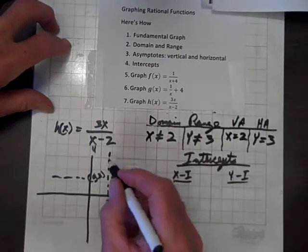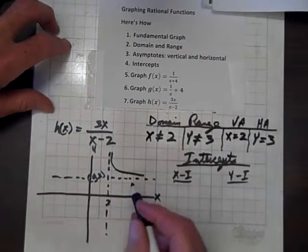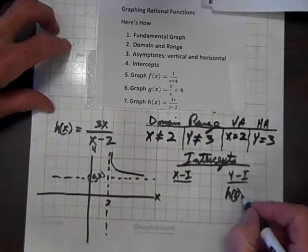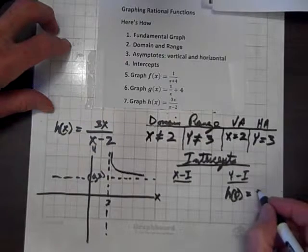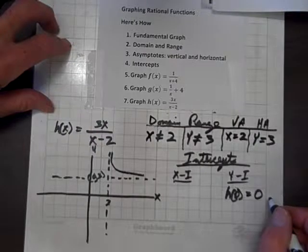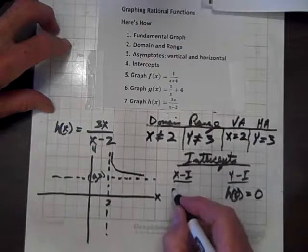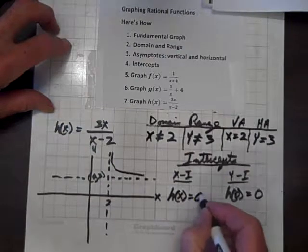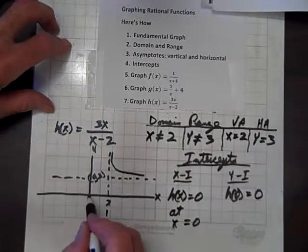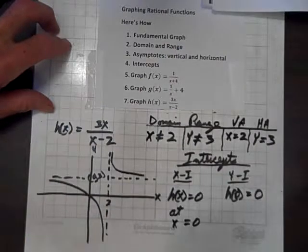As far as the shape, it still hasn't changed. Oh, we have failed to do this though. We have to find our x and y intercepts. So for the y intercepts, h of 0 equals 0. So that's our y intercept and our x intercept, because h of x equals 0 at x equal to 0. So we are done.